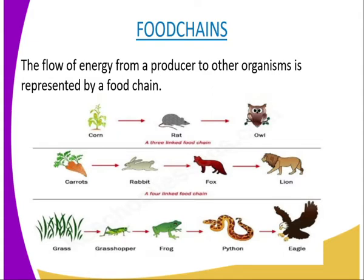As you can see from our screen, in the first food chain, the corn is eaten by the rat and the rat is eaten by the owl. So the corn represents the producer, the rat is our primary consumer and the owl will be our secondary consumer. We have a second diagrammatic presentation whereby the carrots are the producers. We have a third diagrammatic presentation whereby we have the grass, the grasshopper, the frog, the python and also the eagle. All these are representing food chains.